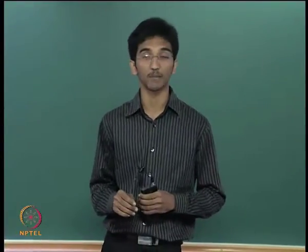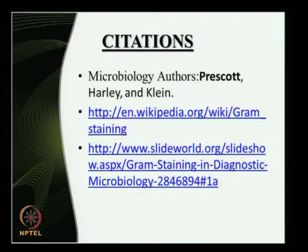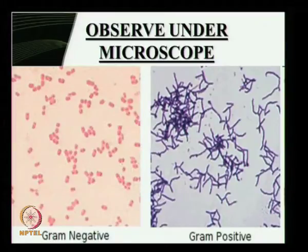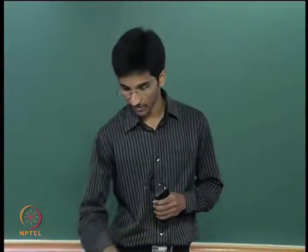These are the pictures of gram negative and gram positive bacteria as seen under simple microscope. As it may seem strange, the bacteria with two different cell wall types react differently with gram staining.